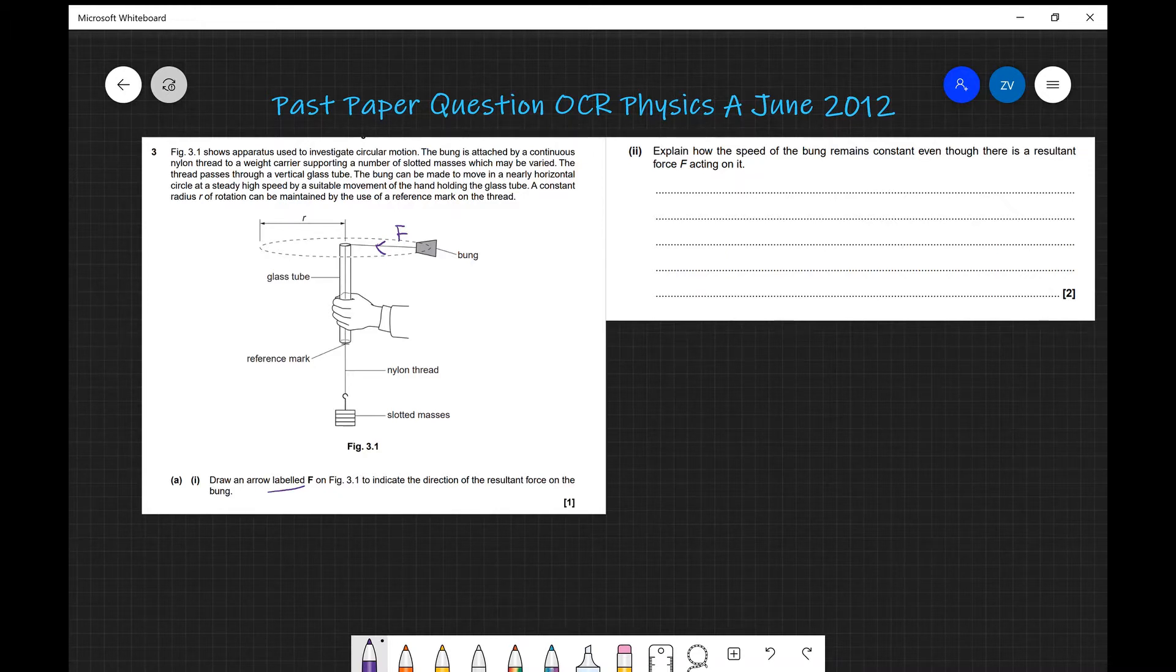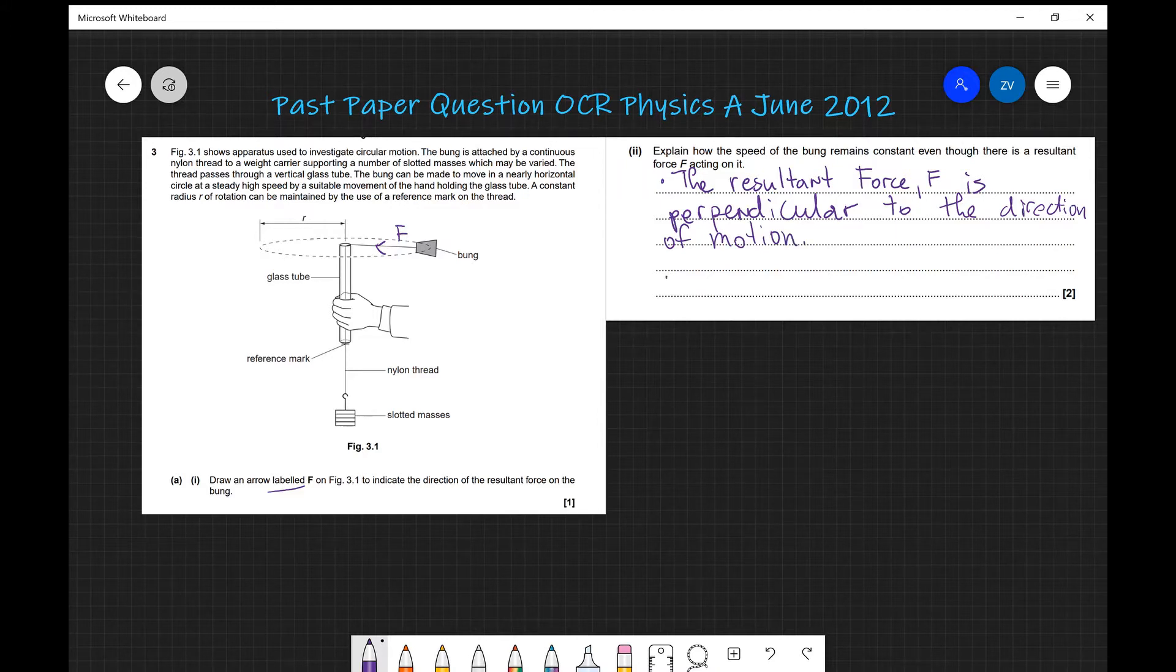Part two of this question explains how the speed of the bung remains constant even though there is a resultant force acting on it. This is exactly what we just discussed a couple of minutes ago when we said that the centripetal force is perpendicular to the velocity. So we can just write that the resultant force F is perpendicular to the direction of motion, and because of that there is no work done.